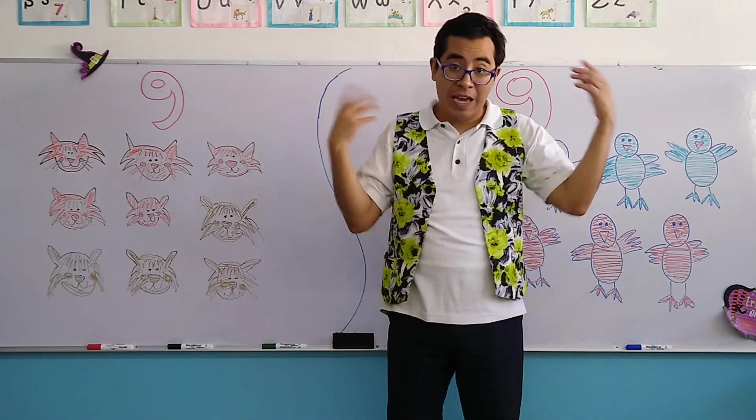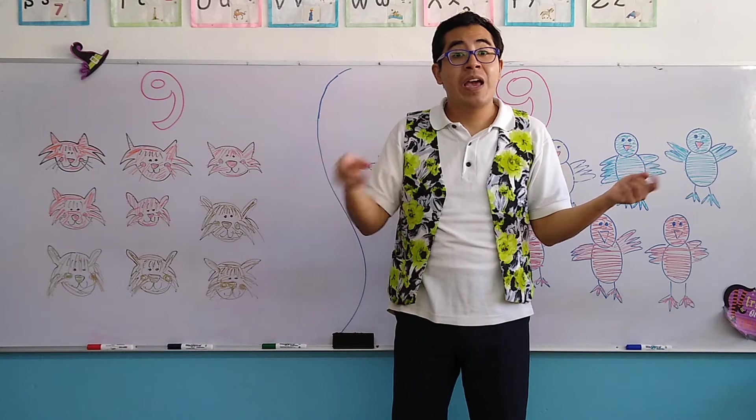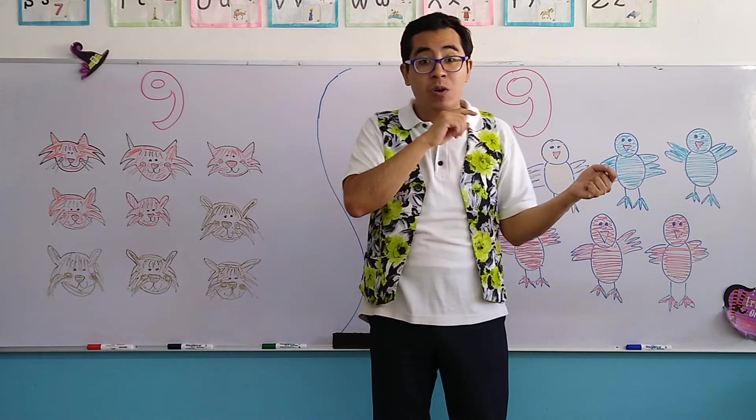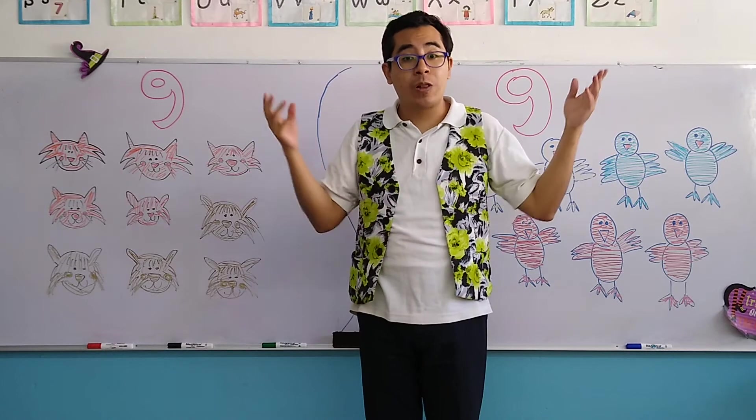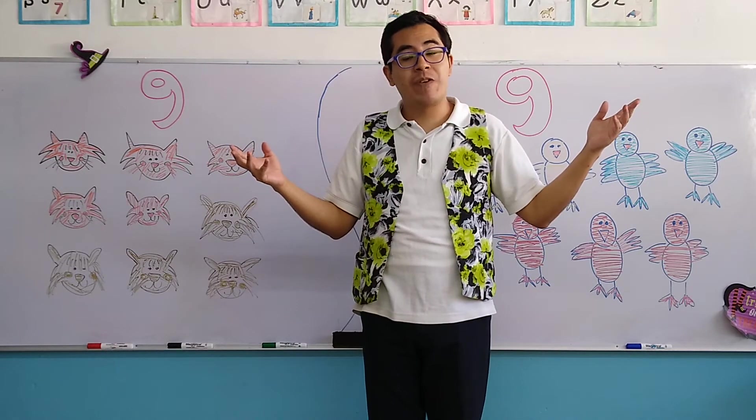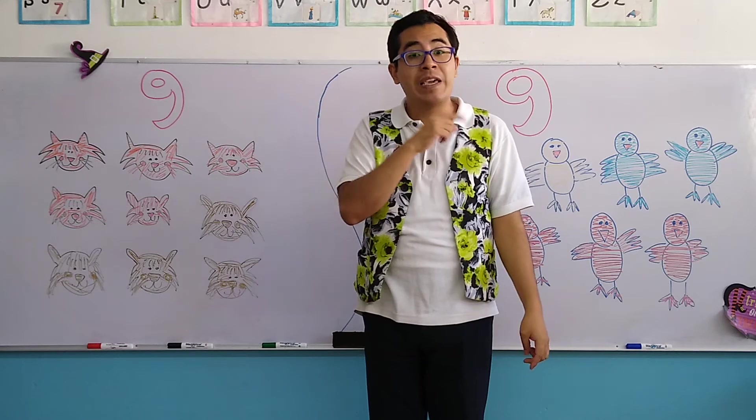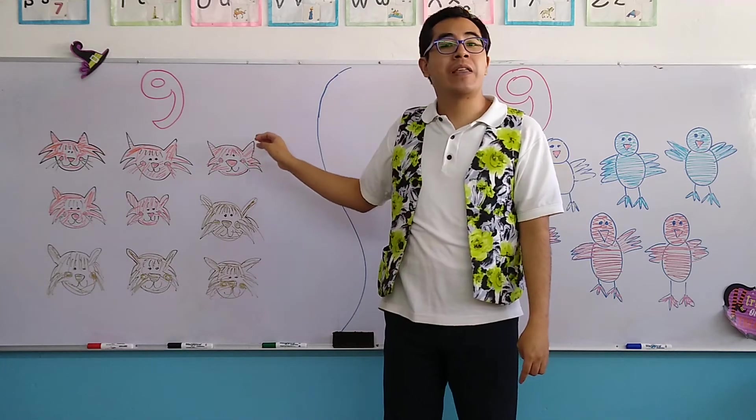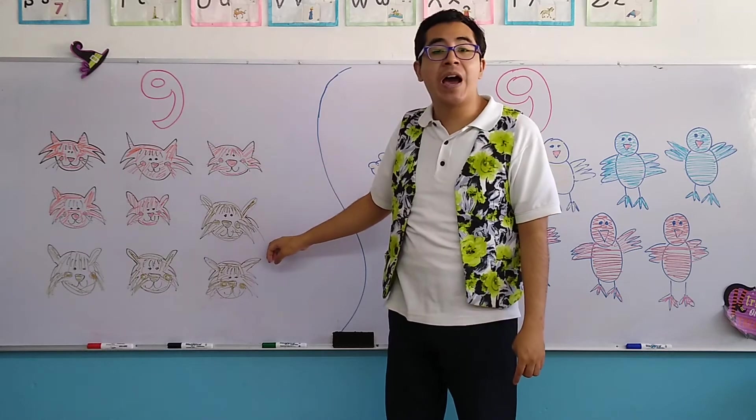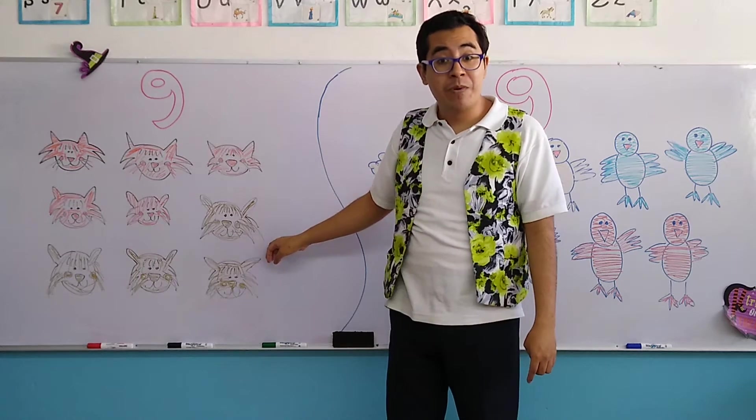And cats have different colors. And also cats can be colored orange. There is a very well known cat called Garfield that is also very lazy and likes to eat a lot. That is orange. So here we have cats that are orange and brown.